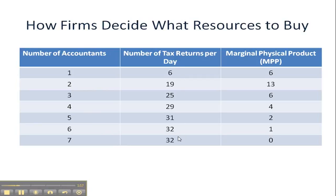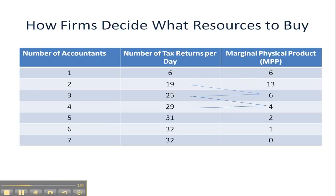We see that the general trend is to increase, but it looks like after the second worker the pattern of tax returns per day increases but at a slower and slower rate. We can figure out the MPP, marginal physical product or just marginal product, and we get that by subtracting the total output of the second worker from the total output of the first worker. The second worker contributed 13, the third worker contributed 6, the fourth worker contributed 4 returns, the fifth worker contributed 2, the sixth worker contributed 1, and the seventh worker didn't contribute any at all.